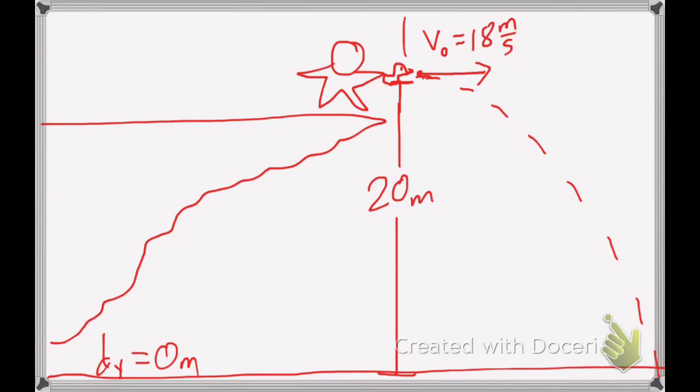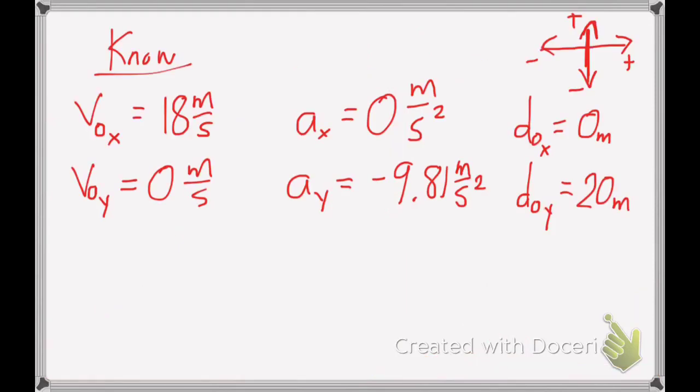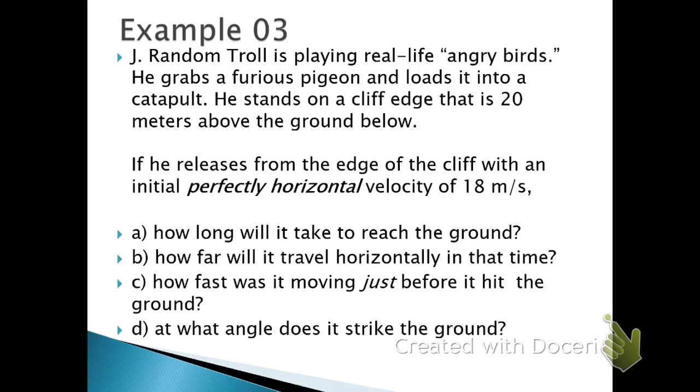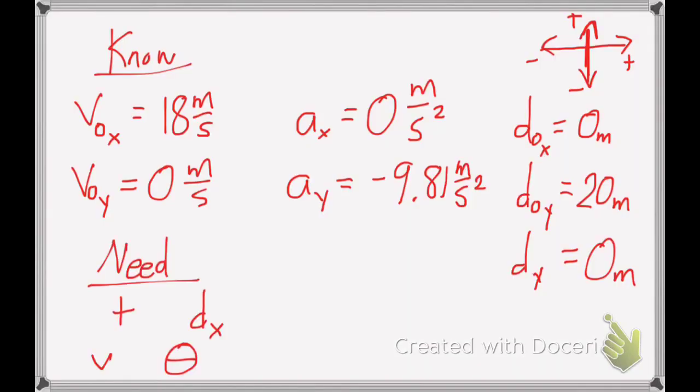I'll go ahead and call the starting position 0 horizontally. Wherever I end will be my horizontal distance. So I also know my final distance in the y direction, my final y position should be 0 because it lands on the ground. Now, the question's telling me what I need to know. How long will it take to reach the ground? That's time. How far will it travel horizontally? That's my final x position. How fast was it moving just before it hit the ground? So that's my total final velocity. And at what angle? So there's what I know, there's what I need to know.